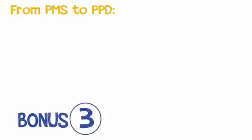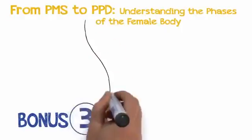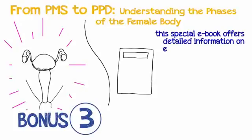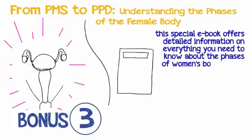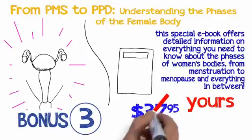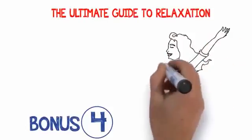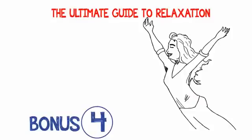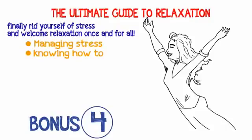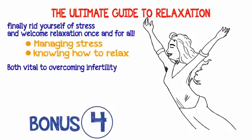Bonus number three: From PMS to PPD, understanding the phases of the female body. This special e-book offers detailed information on everything you need to know about the phases of women's bodies, from menstruation to menopause. $37.95 value, yours free. Bonus number four: The ultimate guide to relaxation. Managing stress and knowing how to relax are vital to overcoming infertility. $39.97 value, yours free.